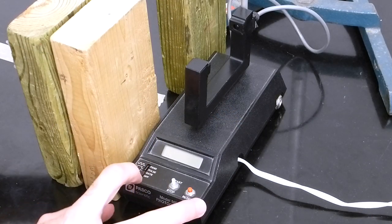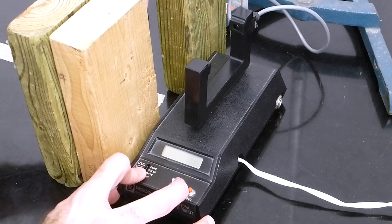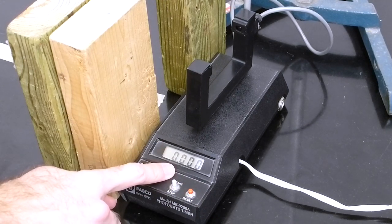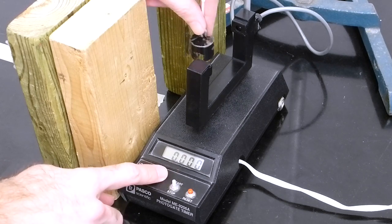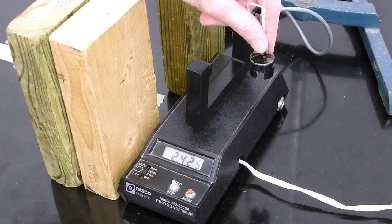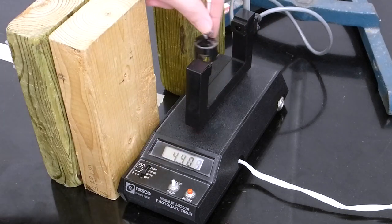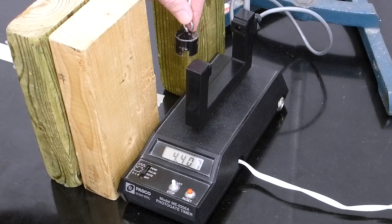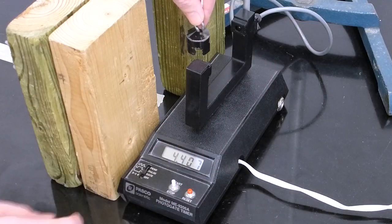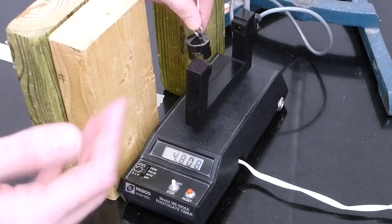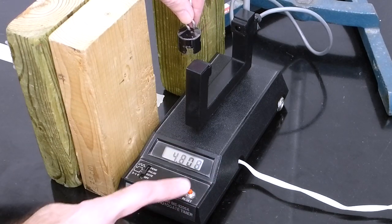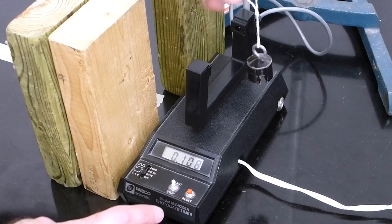When you turn on the photogate and put it on gate position, you will see that the timer will count for as long as the pendulum is obstructing the photogate. We will use this to calculate the speed of the pendulum at the lowest point by using some kinematics. We already measured the diameter, we know the time, or we can measure the time that it will take to pass so we can calculate the speed. After each time, just put the reset button to be able to measure again.